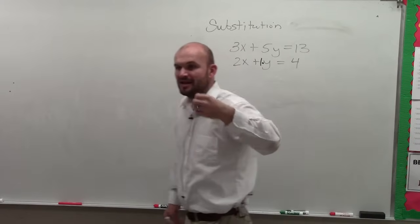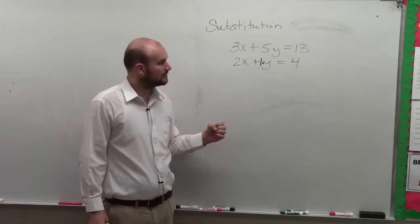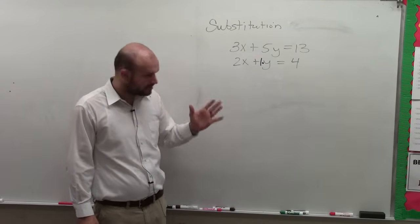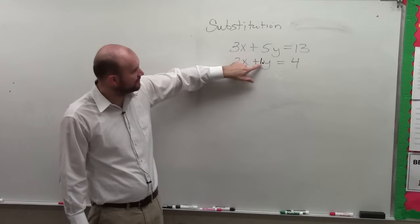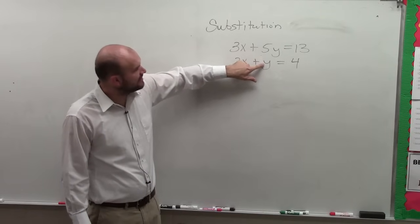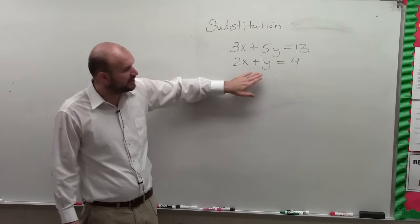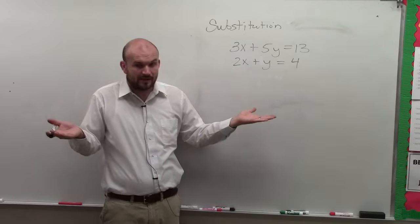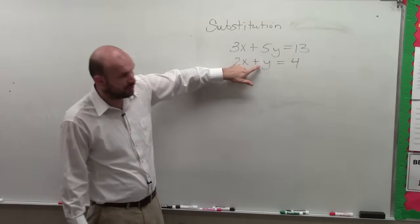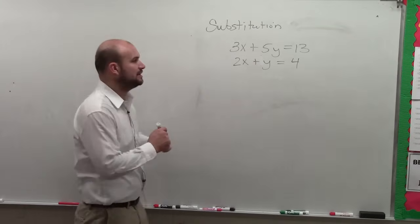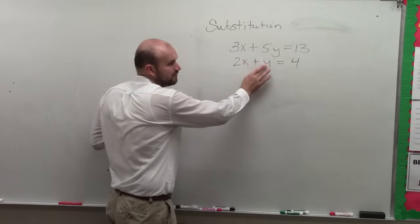It is going to be beneficial for you to use substitution. Make sense? So how do we use substitution? And why is it important when we have a coefficient of 1? The reason being is because whatever variable has a coefficient of 1 or negative 1, and even if you have two of them, just pick which one you want to solve for. But this is the only variable that has a coefficient of 1, correct? So what I'm going to do is I am going to solve for that variable.